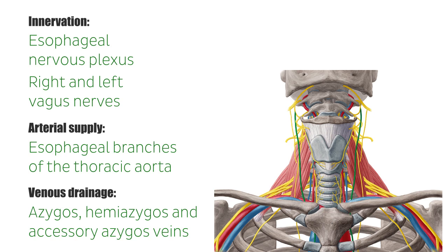It has quite an extensive lymphatic drainage network, which contains several groups of lymph nodes including the inferior deep cervical nodes, the posterior mediastinal nodes, the intercostal nodes, the paratracheal nodes, and the superior and inferior tracheobronchial nodes.